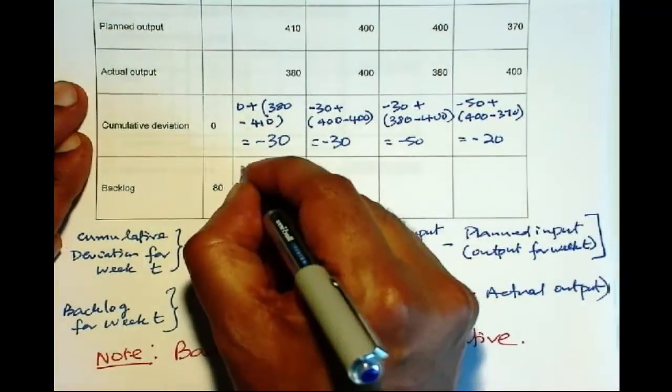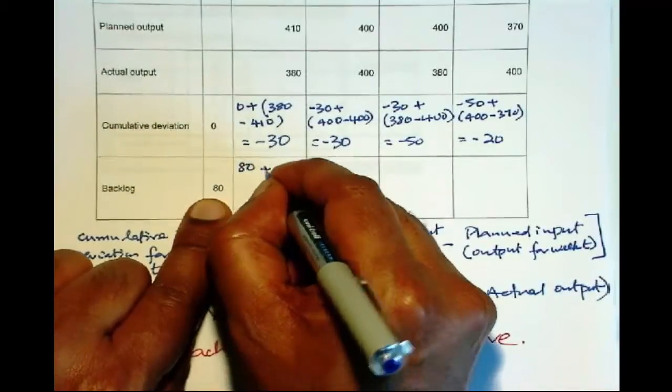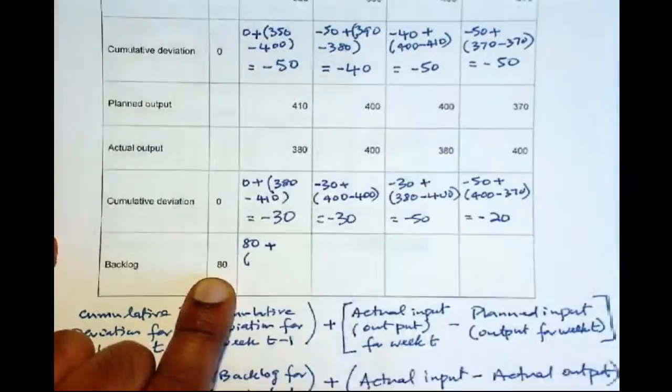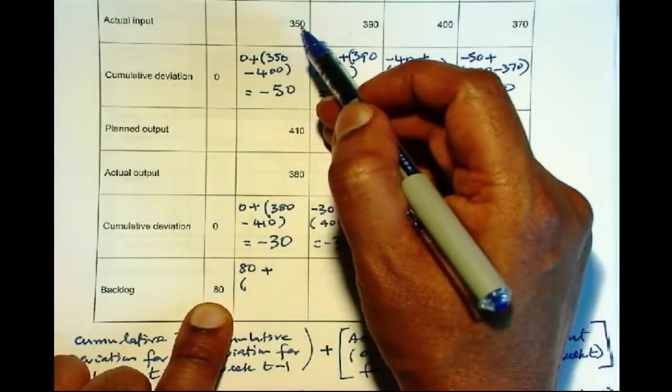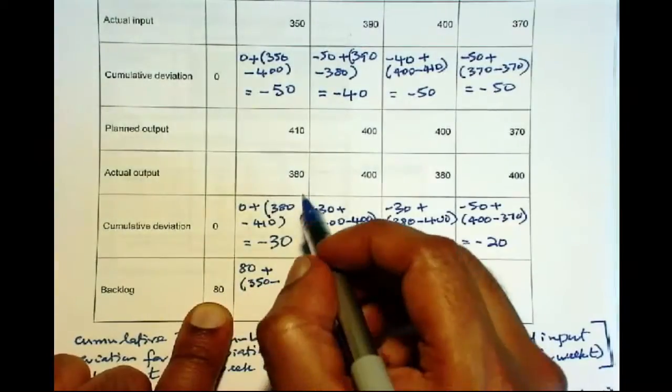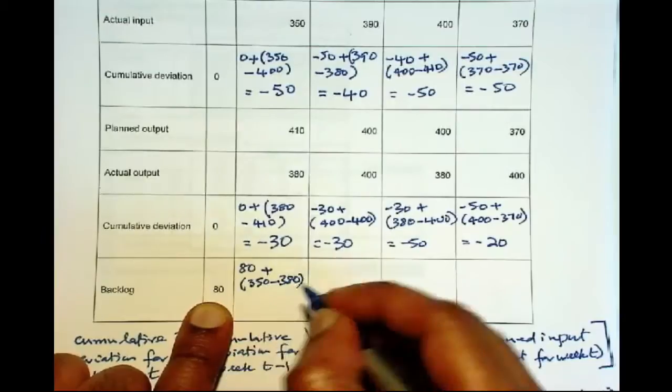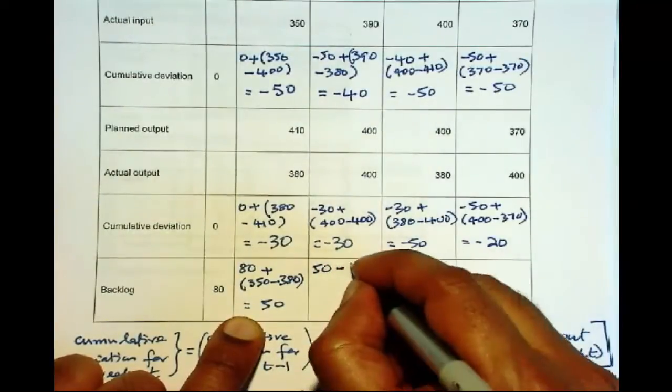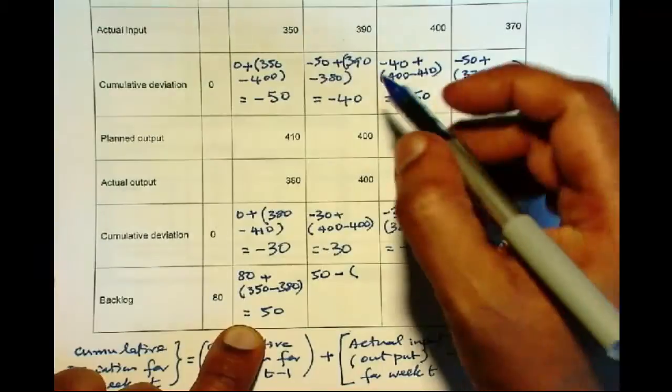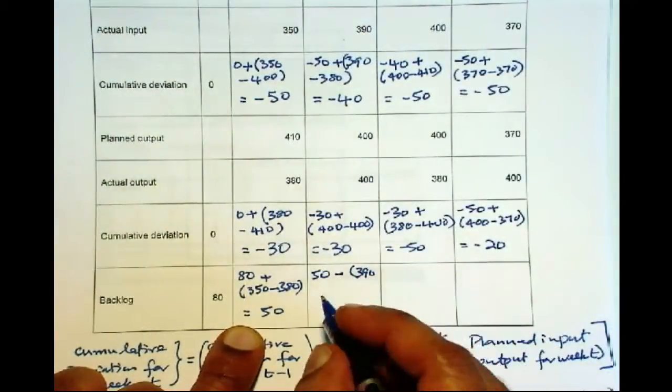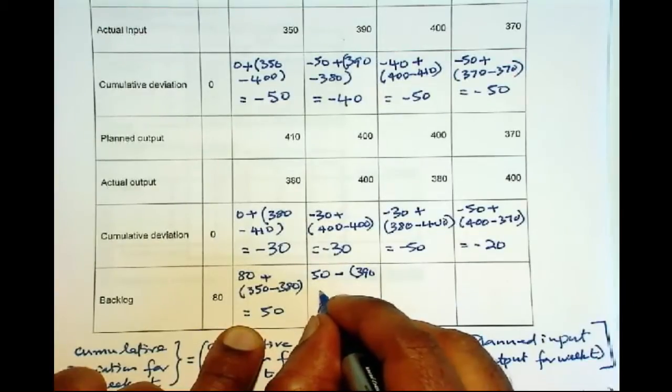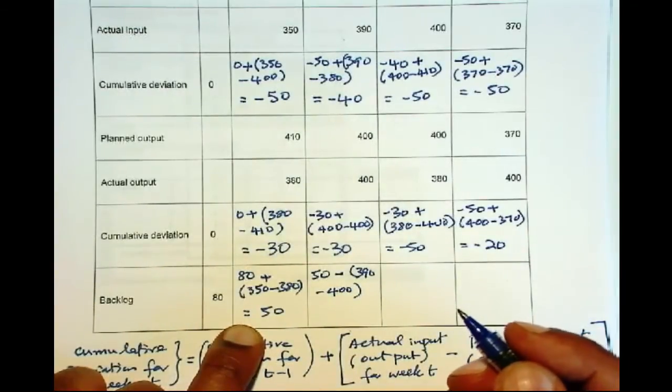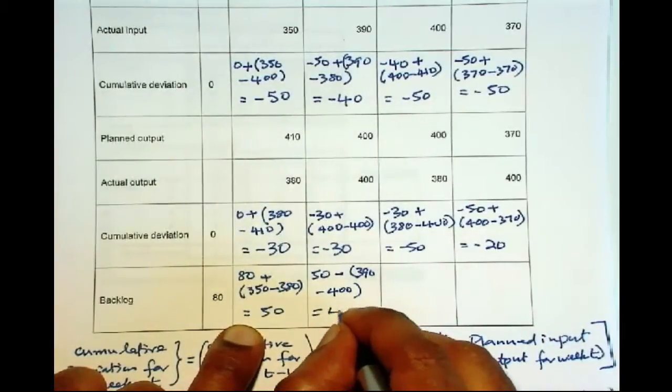So we have 80 previous backlog, plus - remember the actuals - the actual input. Actual input is the amount of jobs that come into the workstation. So the actual input is 350, and what is actually getting out is 380. So the backlog now is 50. From 80, it has come down to 50. Then 50, once again remember the actuals, 390 minus 400. This further goes down to 40.